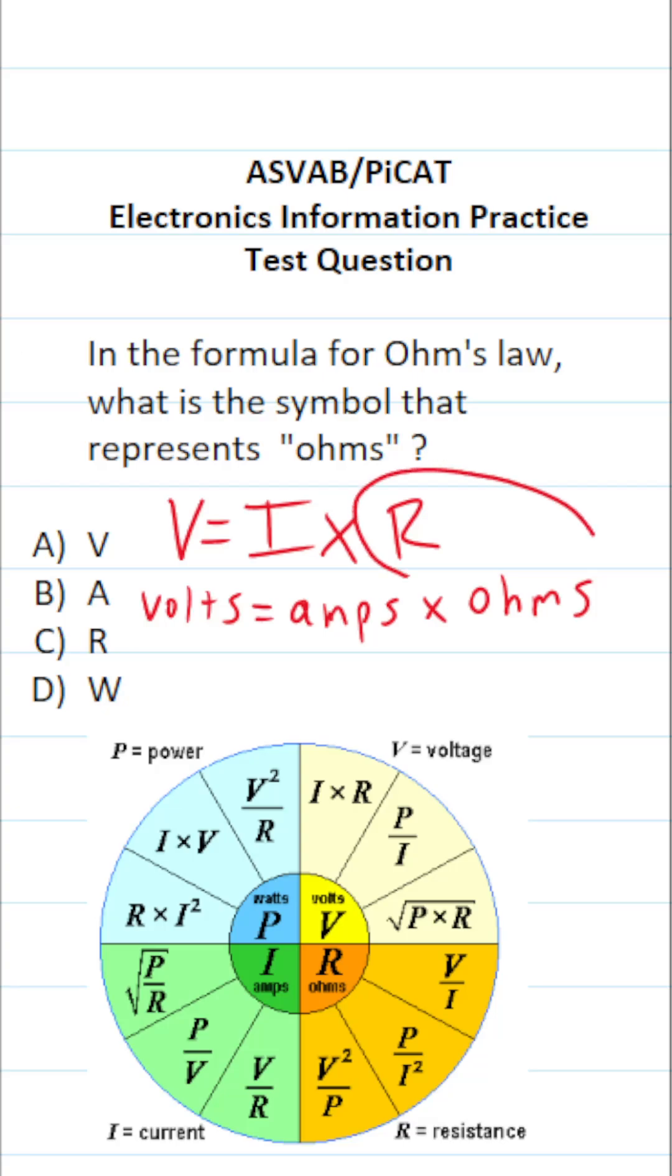we can see that resistance is ohms. So we know that the symbol that represents ohms is going to be R.